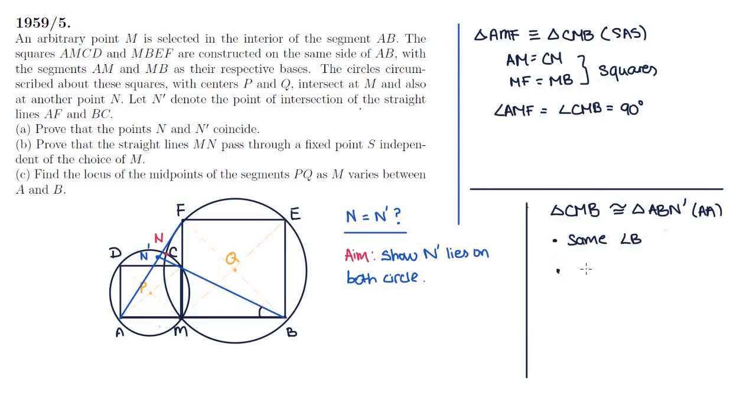we know that angle MCB is the same as angle N'AB. Why is this the case? Because angle N'AB is nothing other than angle FAM, which indeed is equal to angle MCB, because the two triangles AMF and CMB are congruent.